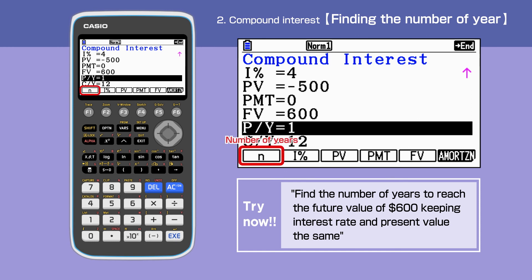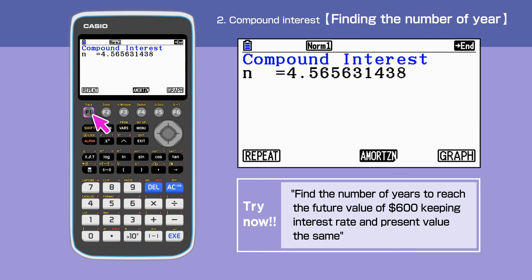Pressing F1 gives us the number of years taken for the original amount to reach $600. It will take 4 years and 7 months to reach the value.